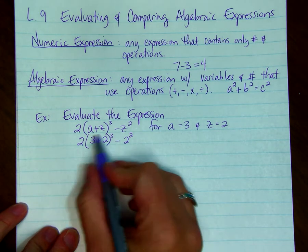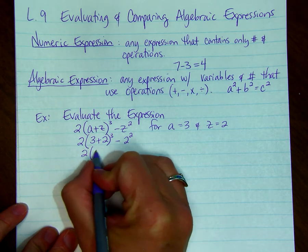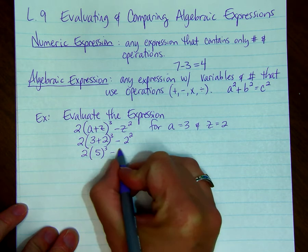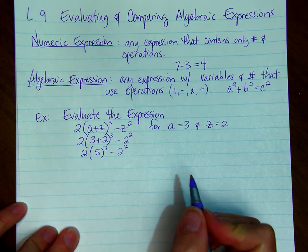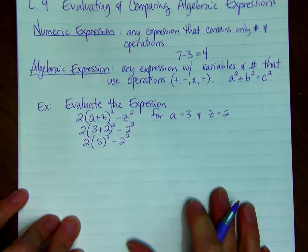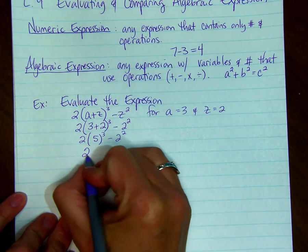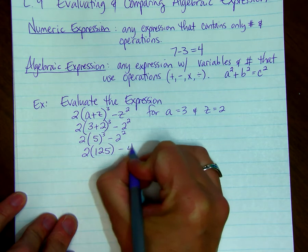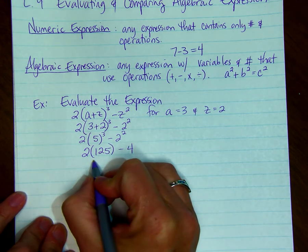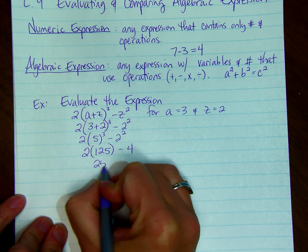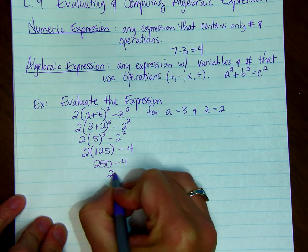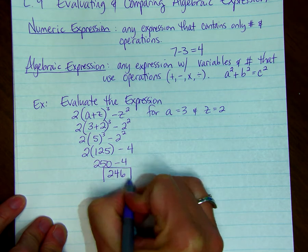So we simplify within parenthesis, and that is 5 cubed minus 2 squared. With our order of operations, we want to simplify the exponents first. So we have 2 times 125 minus 4. 2 times 125 is 250 minus 4, and the answer would be 246.